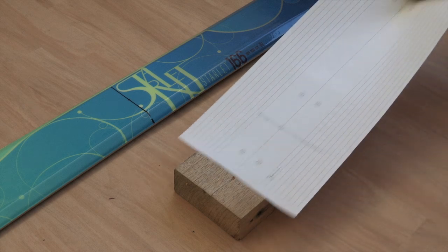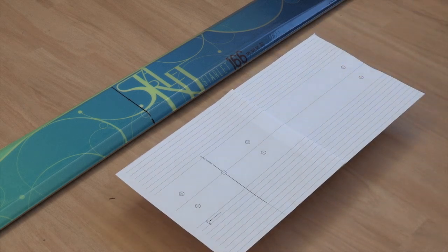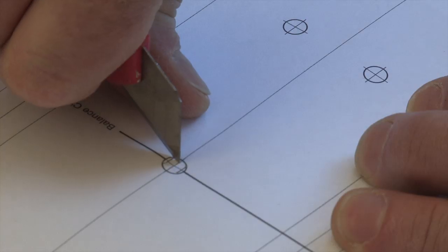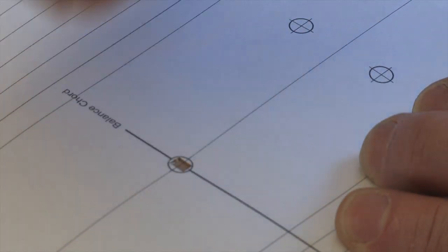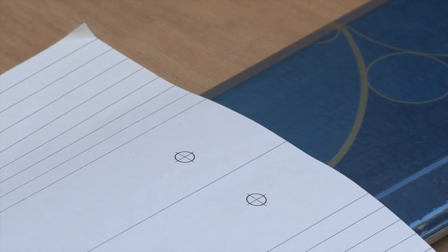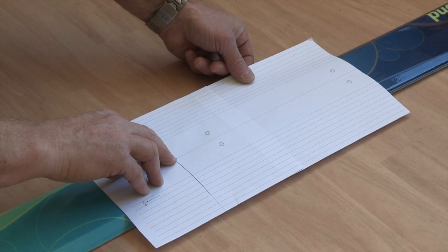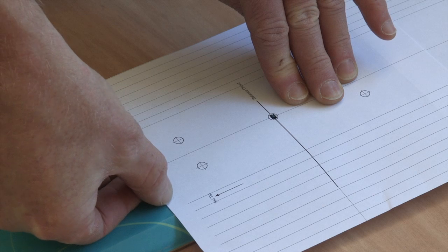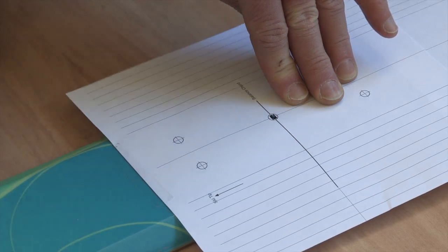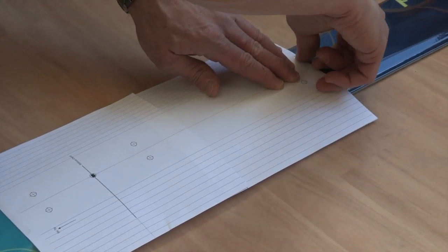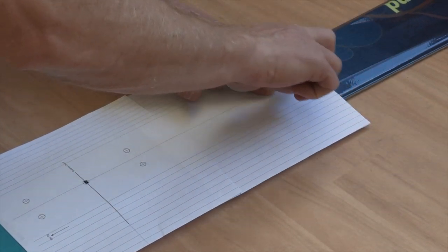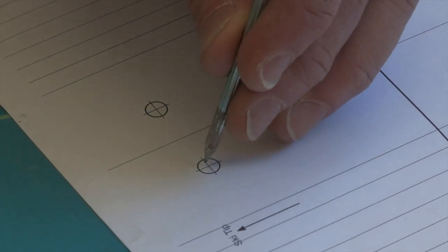If you have a paper template, cut out the centre hole of the multi-shim pattern and align it with the centre point on your ski. Using the guidelines, carefully centre the template on your ski and tape it down firmly.